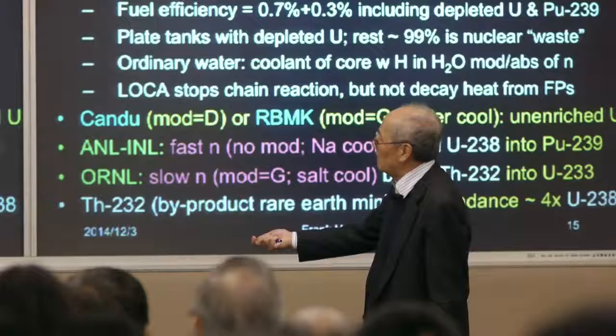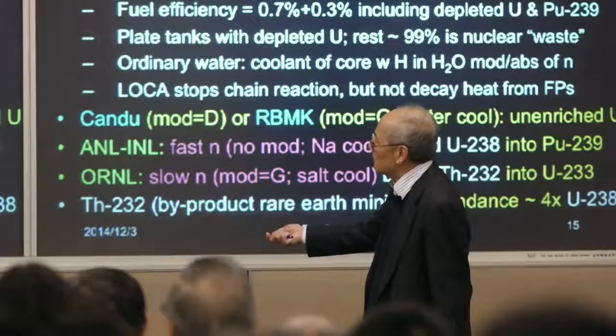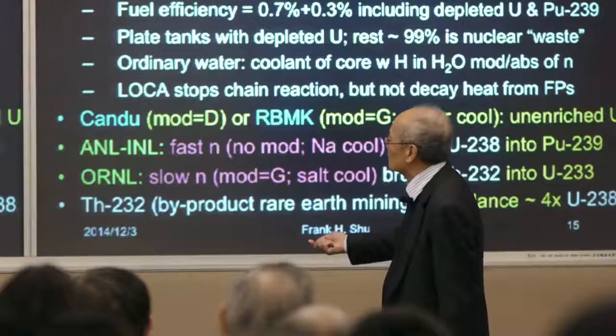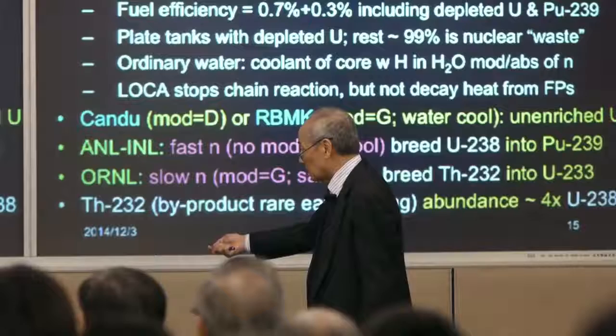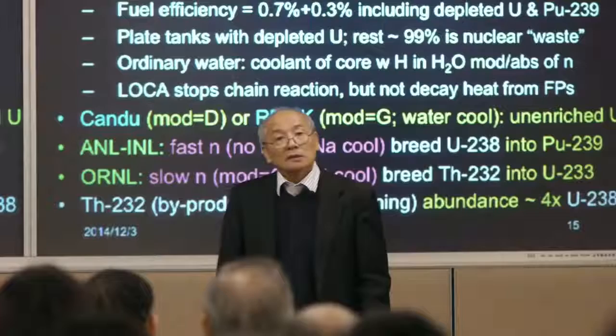The other route is the Oak Ridge National Lab approach from about 50 years ago: slow down neutrons using graphite, but instead of water, use molten salt as the coolant. That configuration also enables breeding.